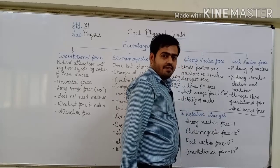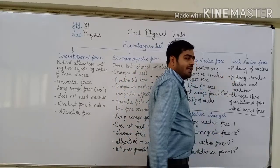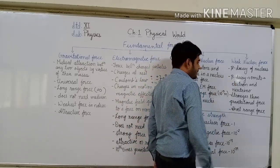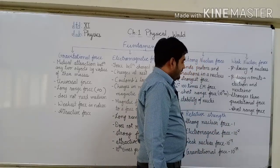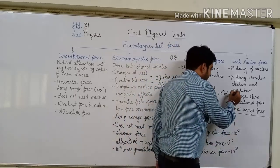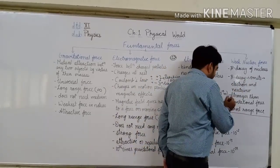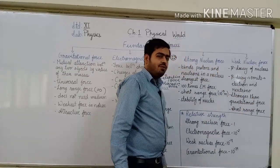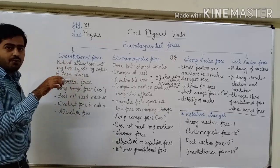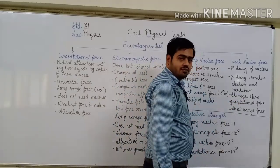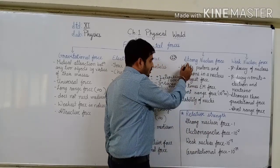Weak nuclear force is observed in the beta decay process, about which we will study in standard 12. When the beta decay process occurs, electrons and neutrinos are emitted. A neutrino is a massless particle. Weak nuclear force is stronger than gravitational force. And weak nuclear force, same as strong nuclear force, is a short range force.